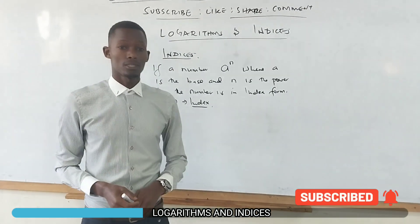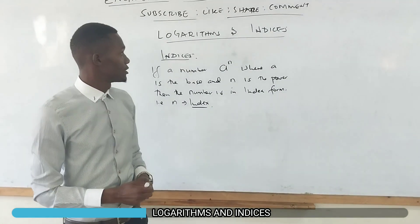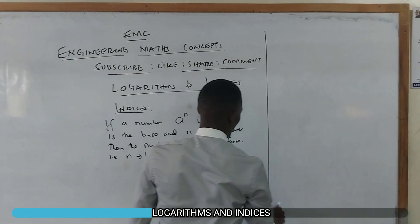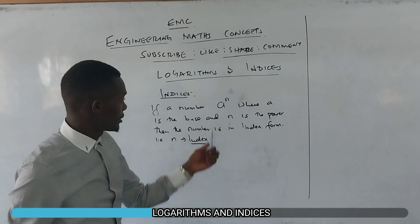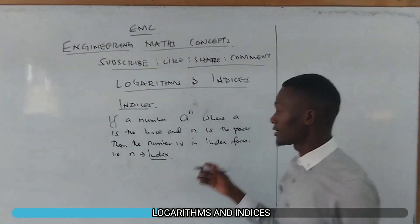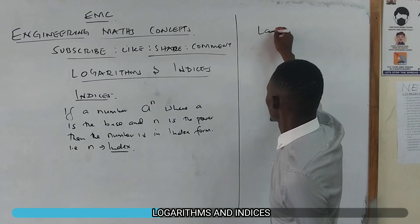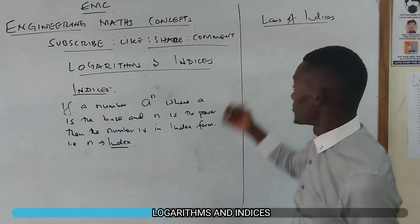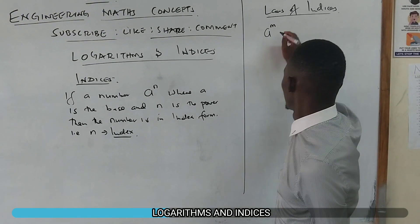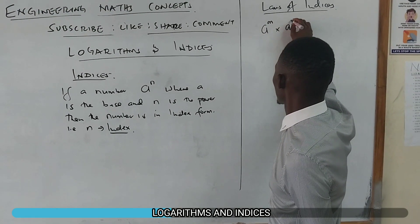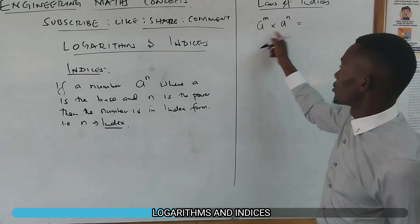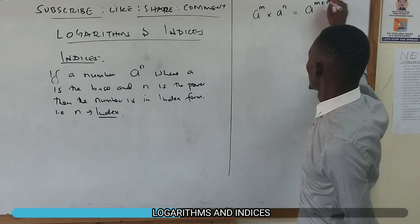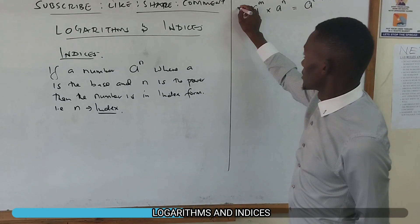Let's now check the laws that govern the operation of indices. Indices have laws, called the laws of indices. If you have a number a raised to power m, and you multiply by a raised to power n, then when you multiply two numbers having the same base a, it's just the same as writing a raised to power m plus n.